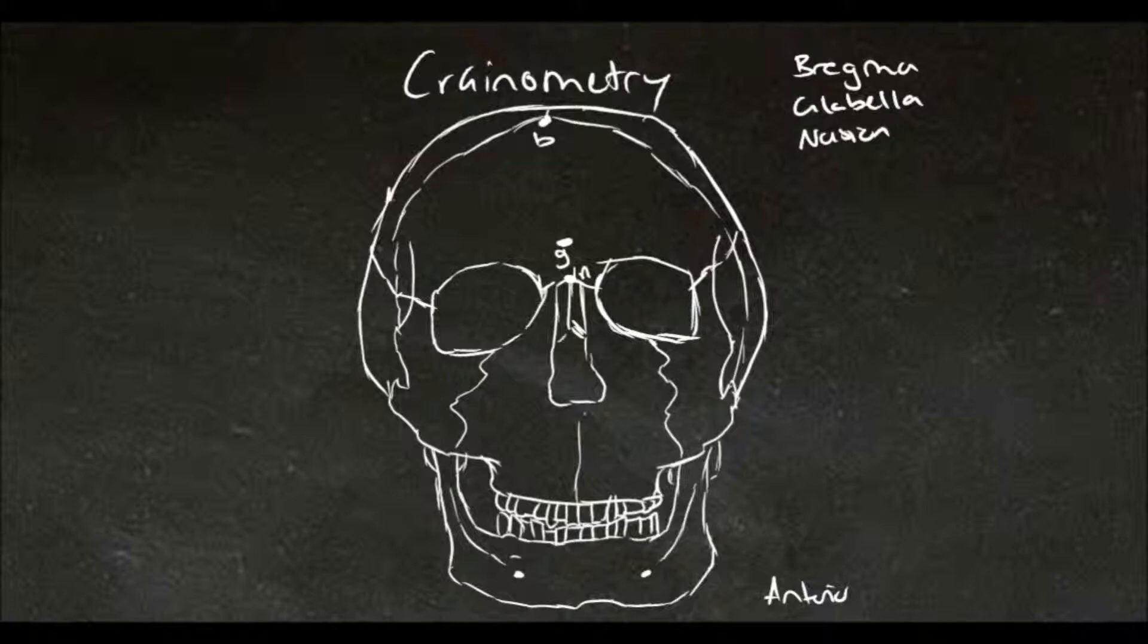The next one down lies here and this is referred to as nasospinale and it is found by drawing a straight line from the right and left nasal apertures towards the midline.